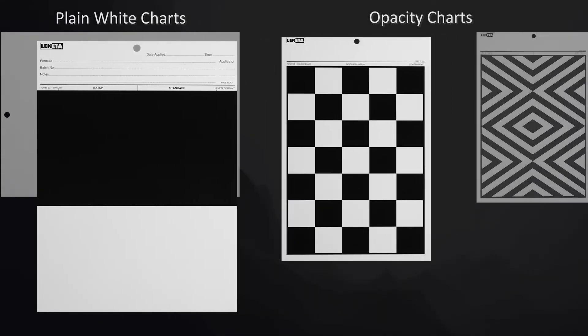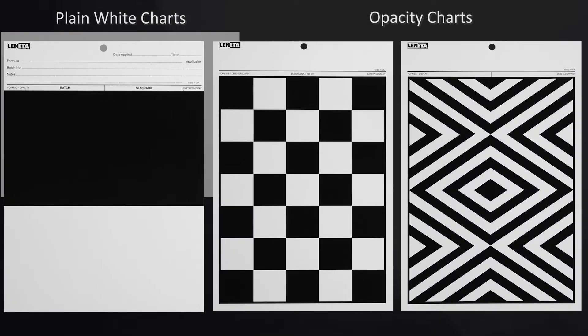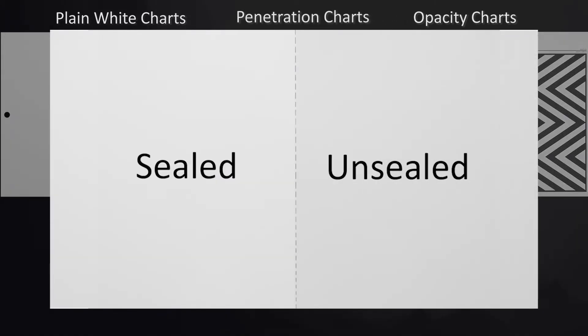Checkerboard and zebra stripe patterns used primarily for visual hiding power evaluations because of their strong visual impact. Penetration charts used for gloss and color evaluations over adjacent porous and non-porous surfaces.